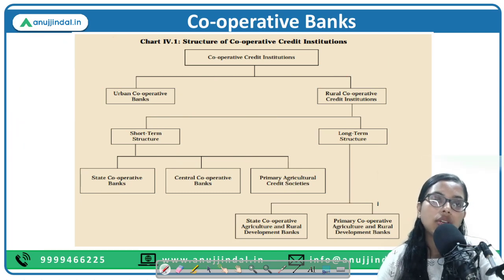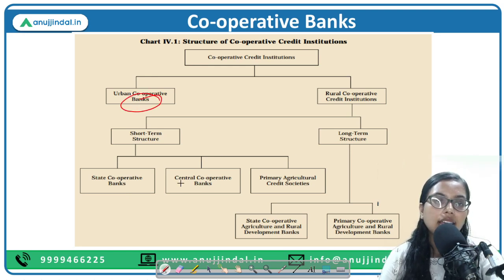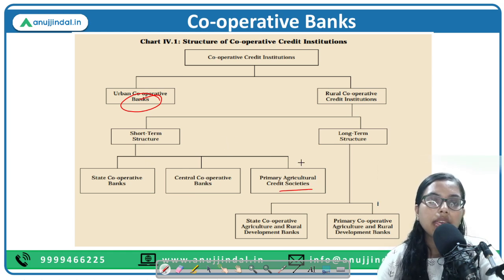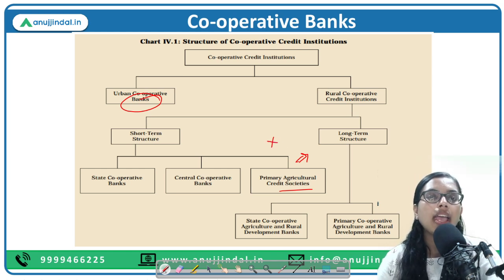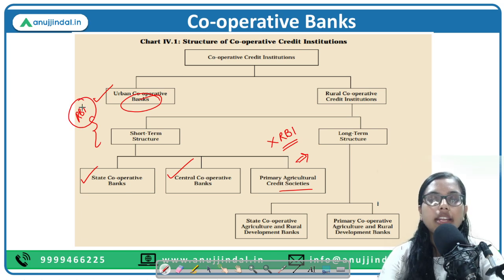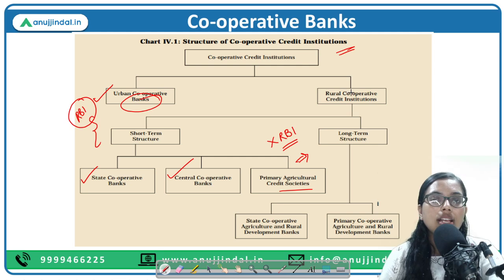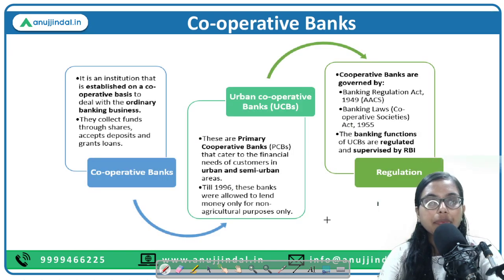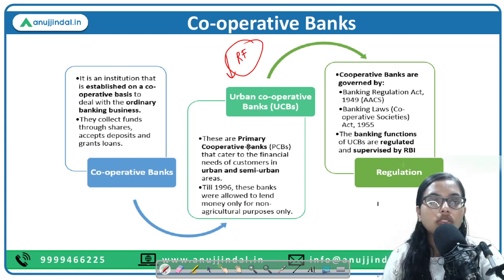An important point: where we have written 'credit societies,' it means they are not banks — just societies — and since they are not banks, they are not regulated by RBI. However, state cooperative banks, central cooperative banks, and urban cooperative banks are regulated by RBI — their banking operations are supervised by RBI. So in rural cooperative credit institutions, short-term has three levels with the apex being state cooperative banks, and long-term has state and primary.